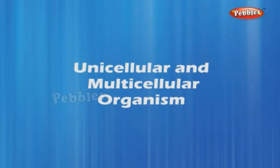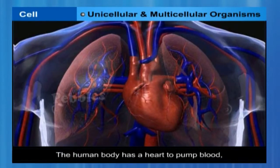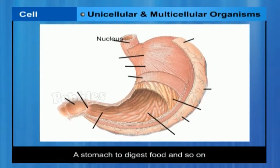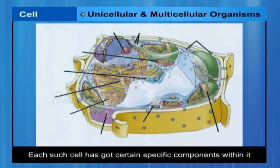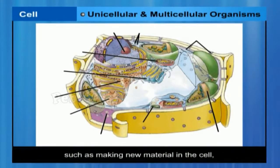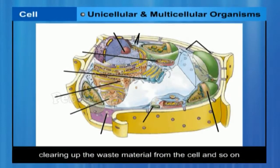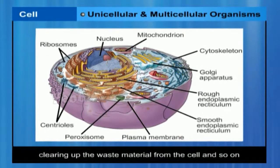The human body has a heart to pump blood, a stomach to digest food and so on. Similarly, division of labour is also seen within a single cell. In fact, each such cell has got certain specific components within it known as cell organelles. Each kind of cell organelle performs a special function, such as making new material in the cell, clearing up the waste material from the cell and so on. A cell is able to live and perform all its functions because of these organelles. These organelles together constitute the basic unit called the cell.